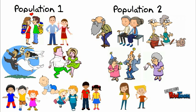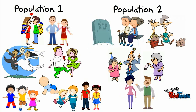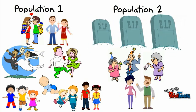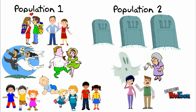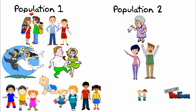In population 2, the children have grown up and had children of their own. However, most of the 80-year-olds are no longer living. The population has decreased.